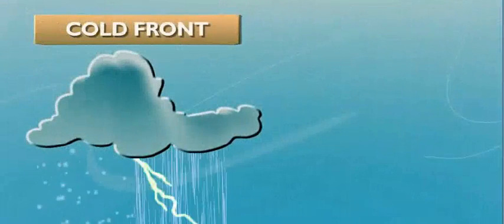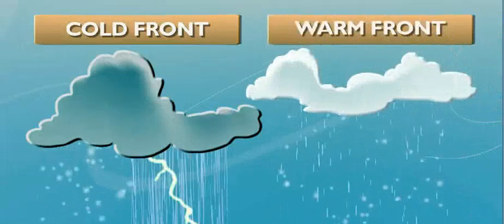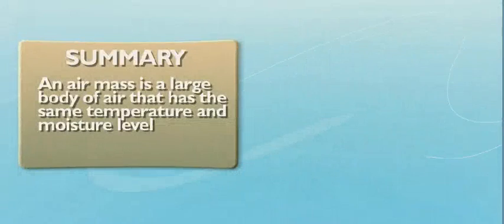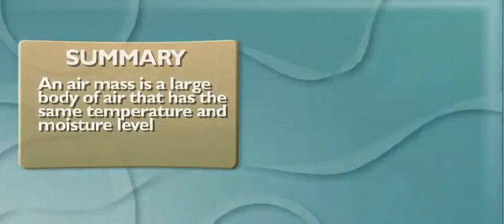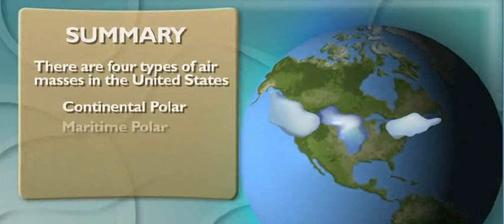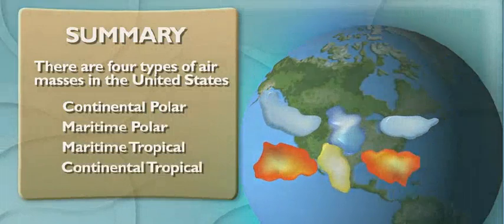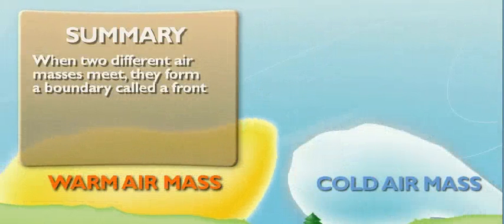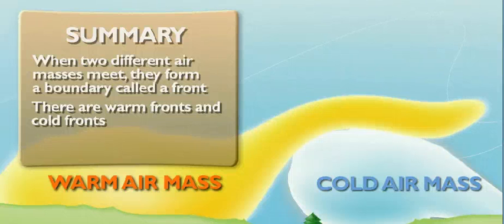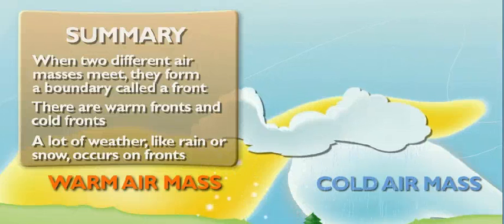A cold front means pretty crazy weather that gets me a snow day, and a warm front just means it might still rain or snow, but it won't be as intense. An air mass is a large body of air that has the same temperature and moisture throughout, and there are four types of air masses in the U.S. Each one has unique characteristics that hint at where it formed. When two of these air masses meet, they form a boundary called a front — it can be a warm front or a cold front, but either way, some kind of weather always happens on a front.